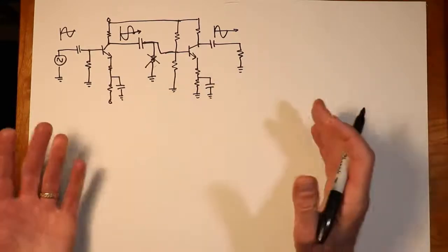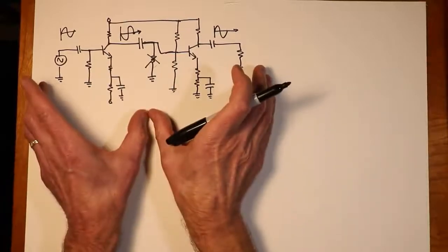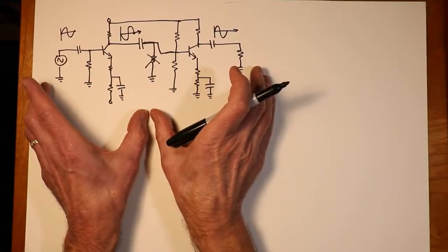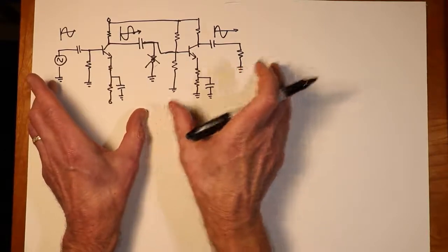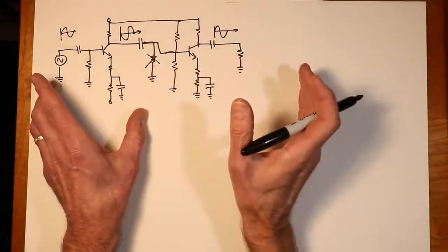Okay, so basically it boils down into two problems. It's just that the load that the first stage sees happens to be the Z in of the second stage.